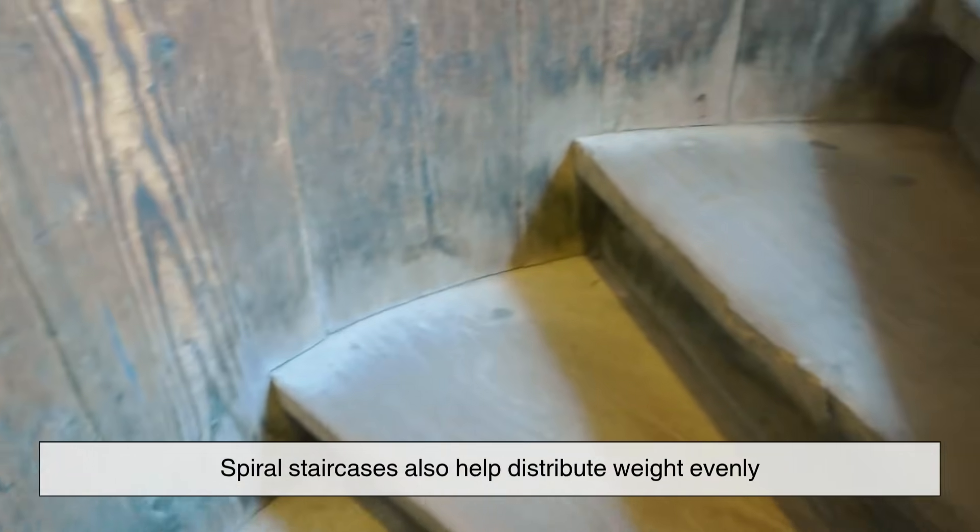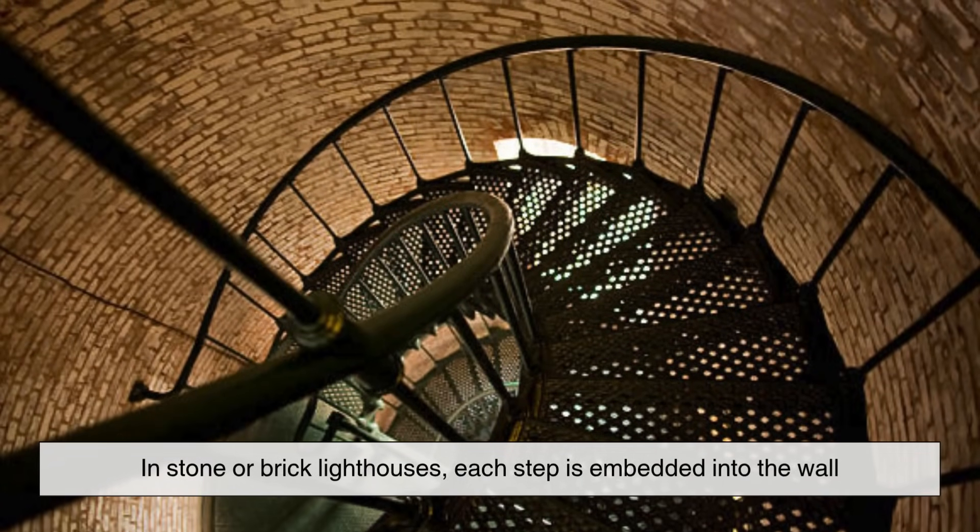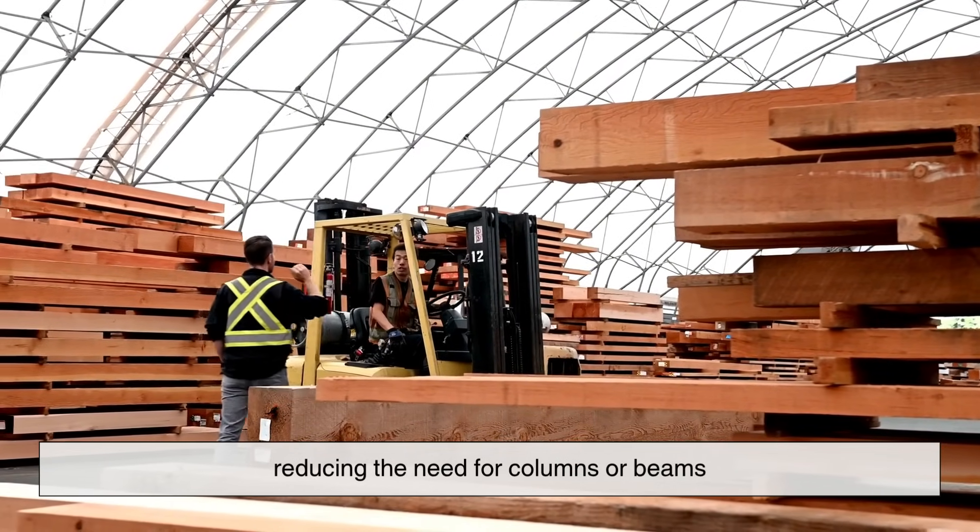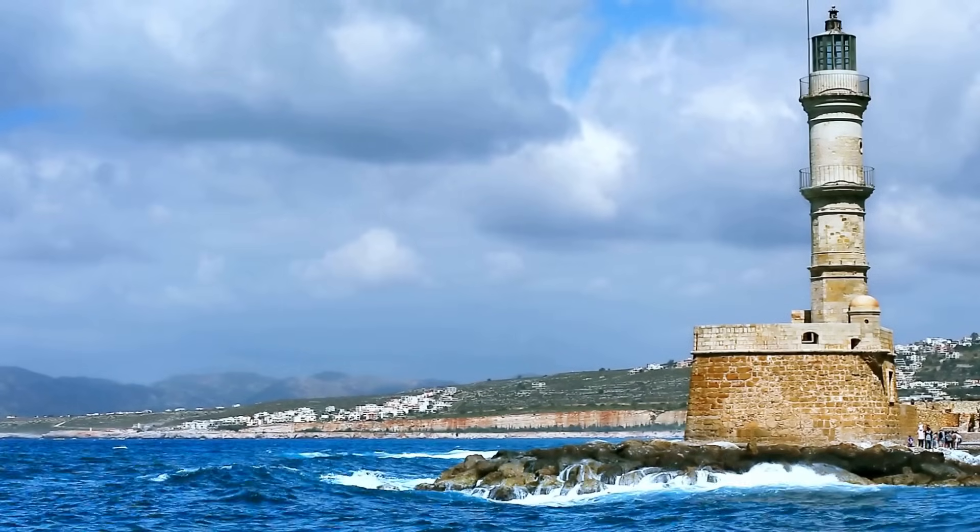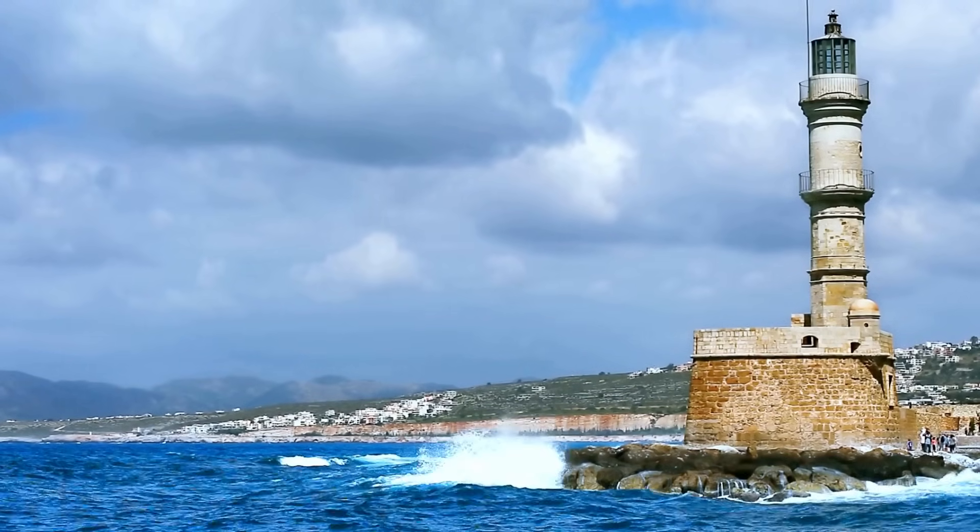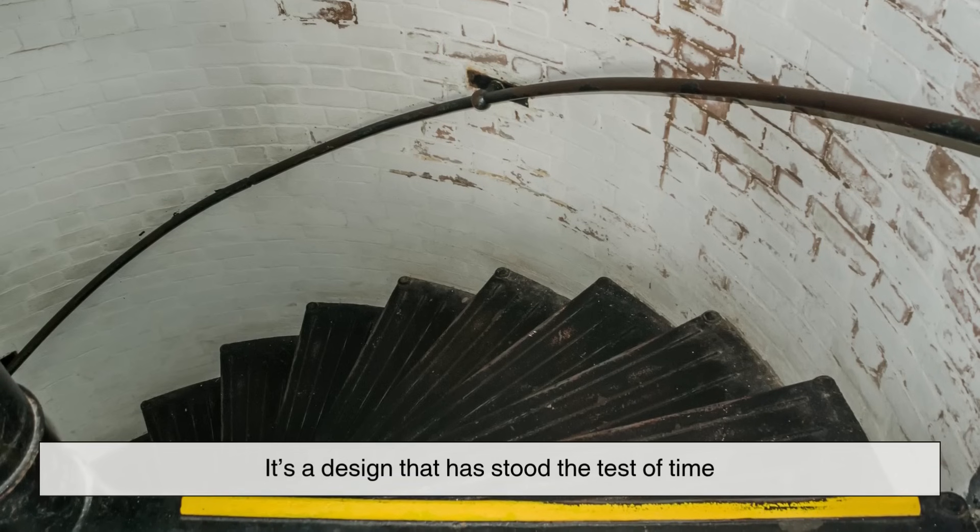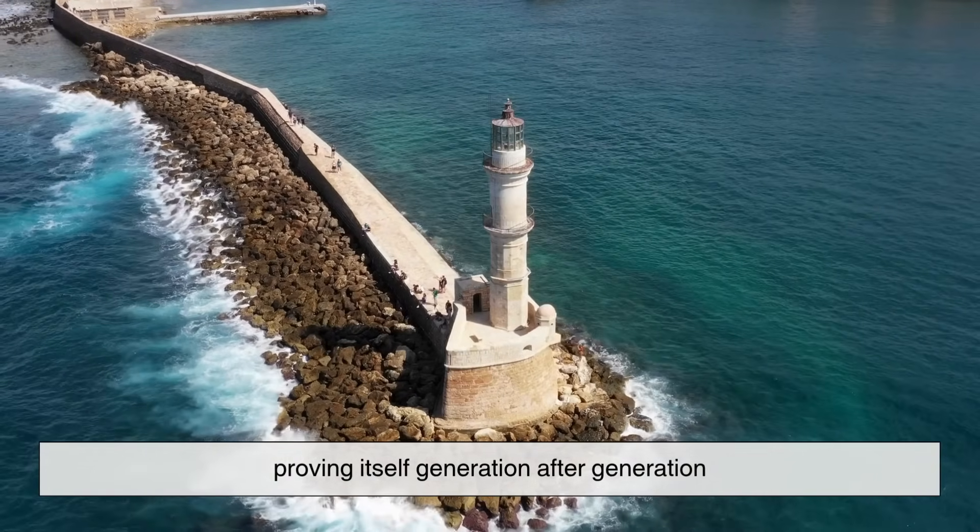Architecturally speaking, spiral staircases also help distribute weight evenly. In stone or brick lighthouses, each step is embedded into the wall, reducing the need for columns or beams. That's a huge advantage when you're working in a remote coastal location with limited materials. It's a design that has stood the test of time, proving itself generation after generation.